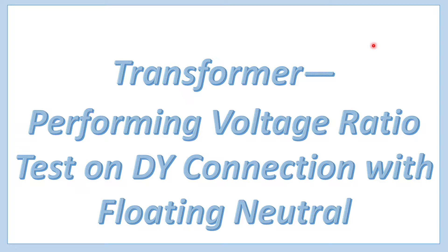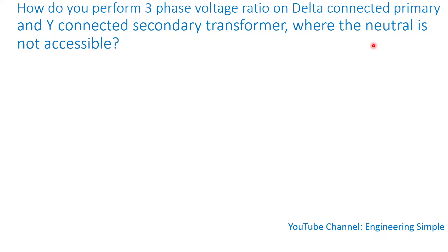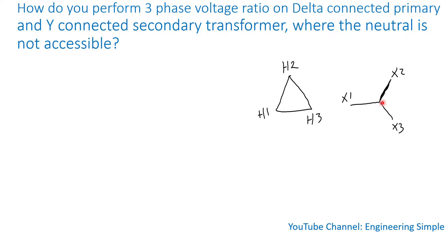In this video I'll talk about how to measure the voltage ratio for transformers connected as delta-Y, with the Y having a neutral not accessible. So you cannot measure phase-to-phase voltage on the Y side. What we can do is perform a single-phase ratio, and there is a formula to convert from single-phase to three-phase ratio. Looking at the sketch to the right, you have the delta and the Y, with the neutral not accessible, so you can only measure line-to-line on the Y side.